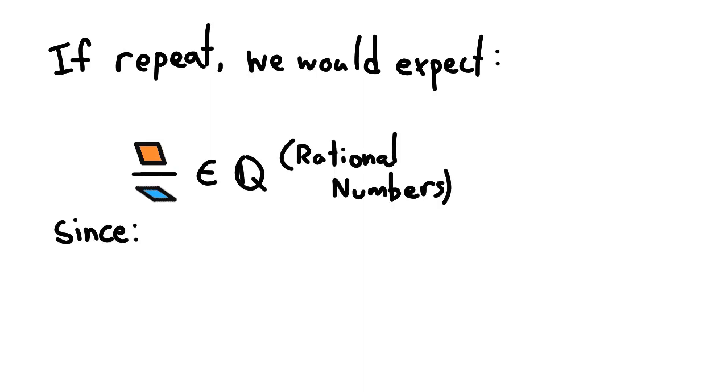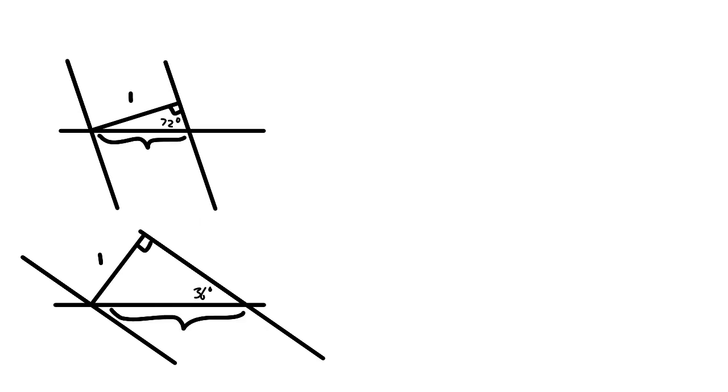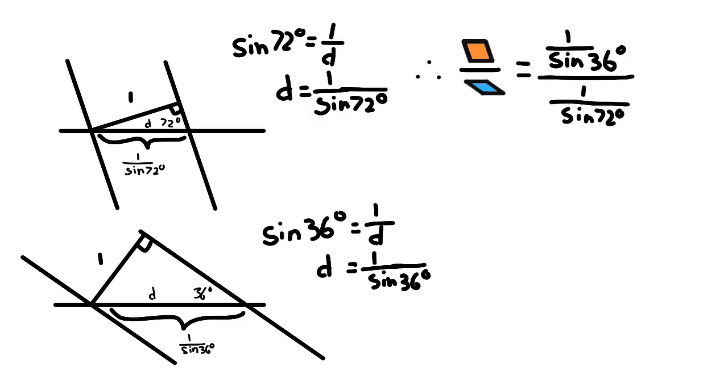If the pattern were to repeat at some point, we would expect the ratio of thick tiles to thin tiles along a single line of the pentagrid to be a rational number, as there would have to come some point where the pattern repeated. Using some basic trigonometry, we can find the ratio of thick to thin tiles is sine 72 over sine 36, which is the golden ratio.